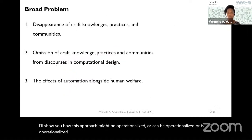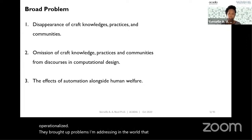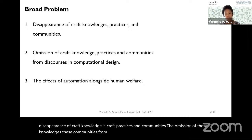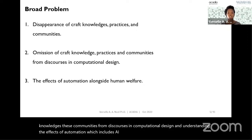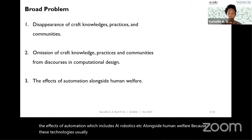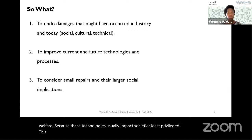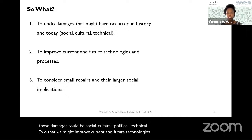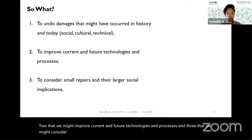The broader problems I'm addressing are the disappearance of craft knowledges, craft practices and communities, the omission of these knowledges and communities from discourses in computational design, and understanding the effects of automation — including AI, robotics, etc. — alongside human welfare, because these technologies usually impact society's least privileged. This is done so that we might undo damages that have occurred in history and today — social, cultural, political, technical — that we might improve current and future technologies and processes, and consider small repairs and their larger social implications.